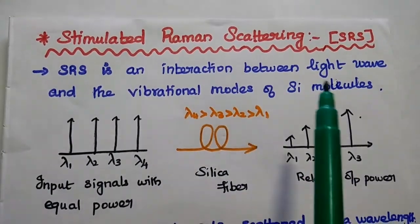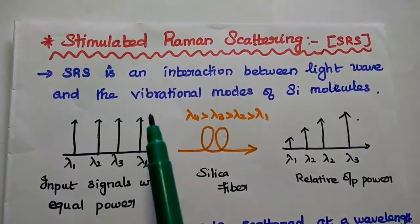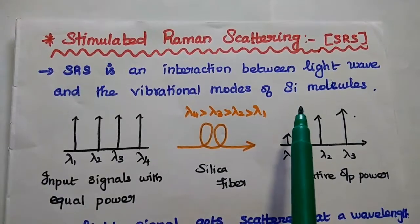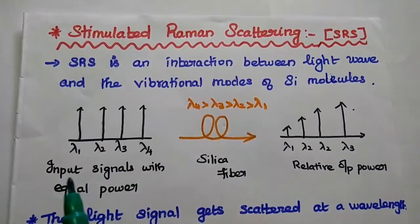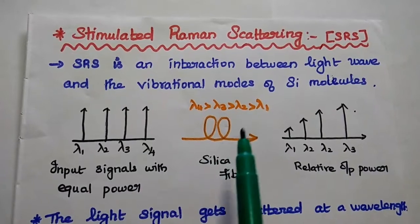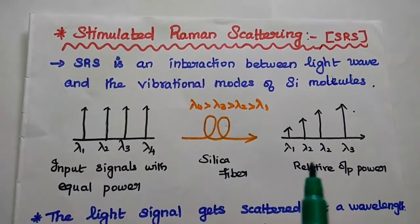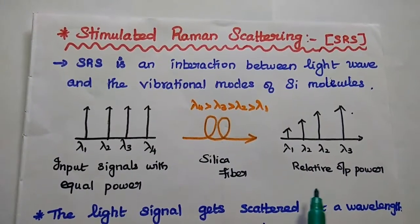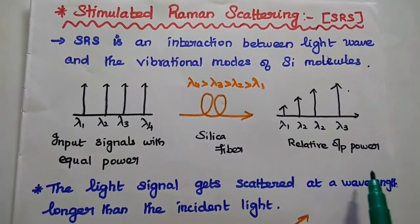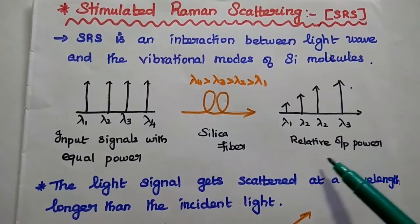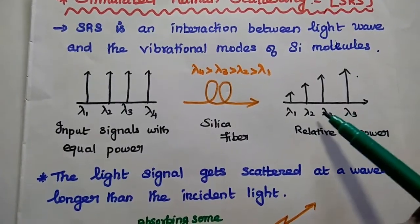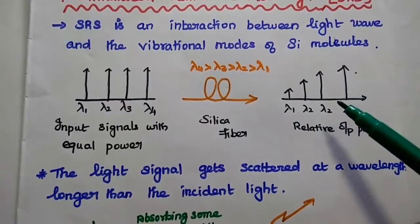Stimulated Raman scattering (SRS) is caused by an interaction between the light wave and the vibrational modes of silicon molecules in a fiber cable. When input signals with equal power are given to the silica fiber, the SRS effect generates scattered light at a wavelength longer than that of the incident light. This effect is called the broadband effect, where energy from the short wavelength is transferred to the next higher wavelength.